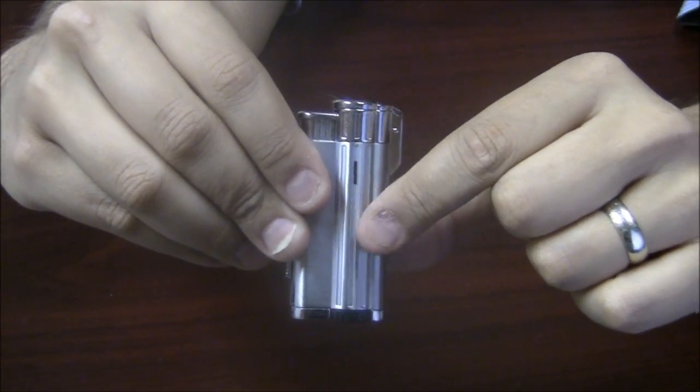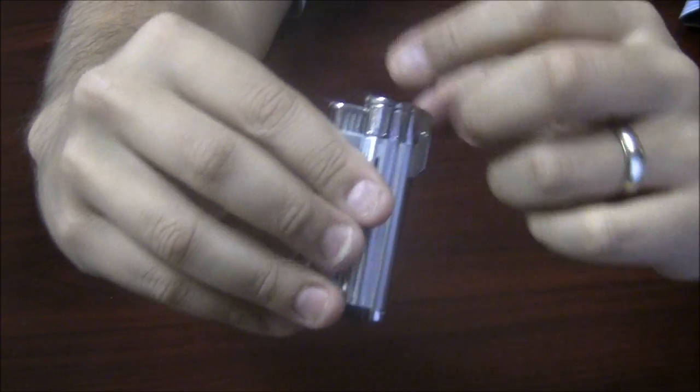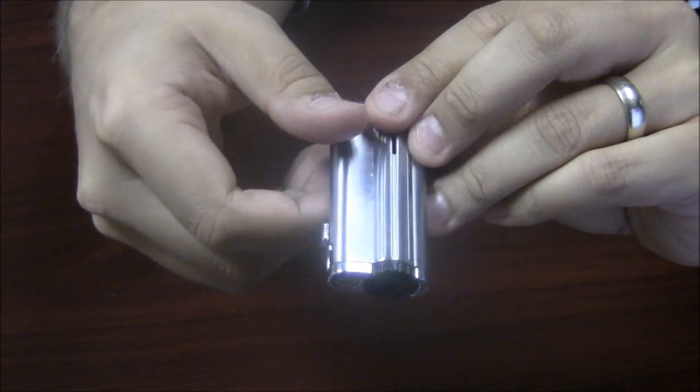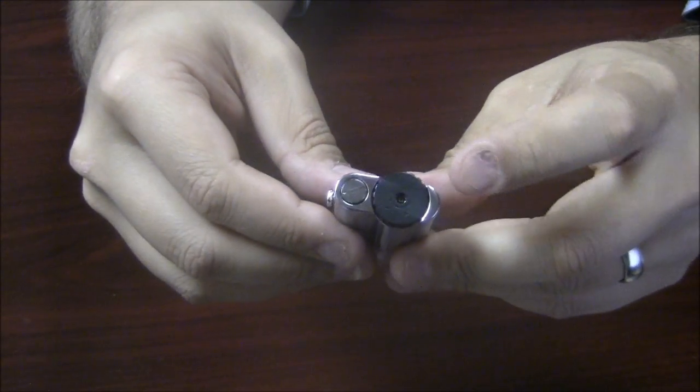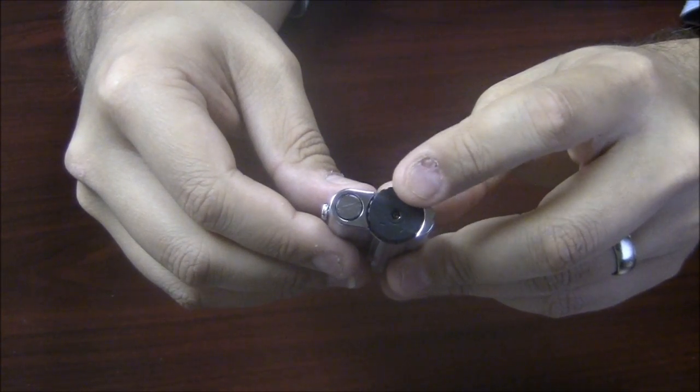It has a textured surface that fits really easily in your hands and is not going to slip out. The bottom of the lighter has your refill valve and adjustment knob.